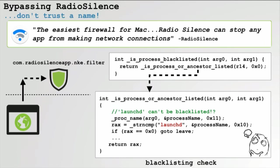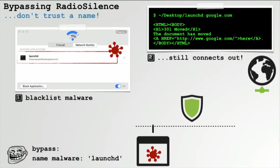First up, we have Radio Silence, a popular firewall for macOS that takes an interesting approach — it allows any new process, but the user can explicitly blacklist certain applications. However, if we look at the blacklisting logic in the kernel extension, we can see it looking for a process name, and it appears that if the process is named launchD, it cannot be blacklisted or blocked. So we take some malware, name it launchD — the path doesn't matter, just the name — and manually create a rule to blacklist this process. When we run it, it's still allowed out because it is named launchD. Kind of lame, but it fully bypasses this firewall.